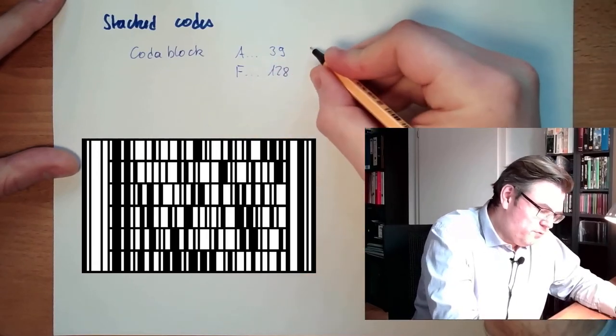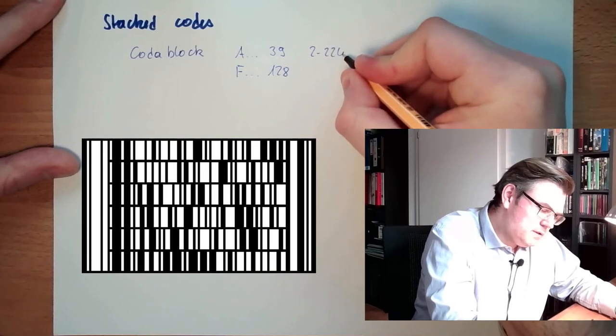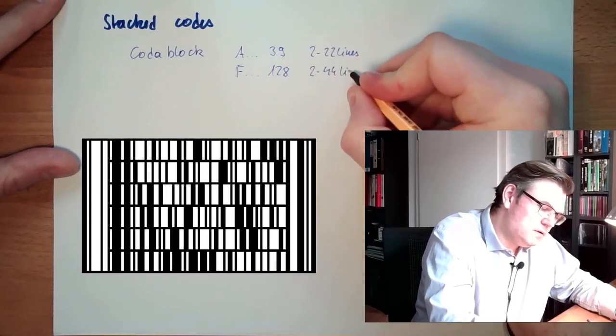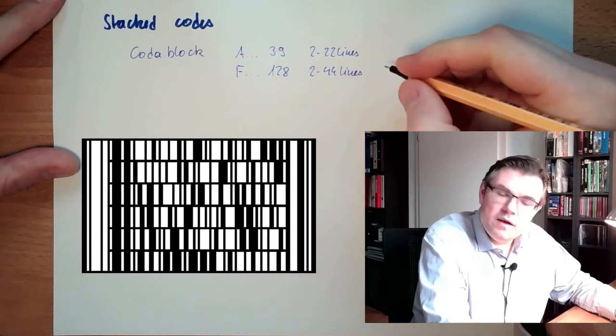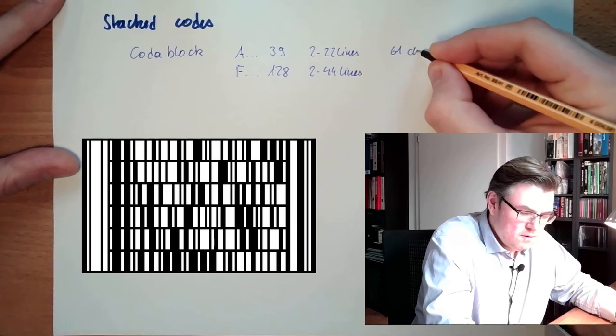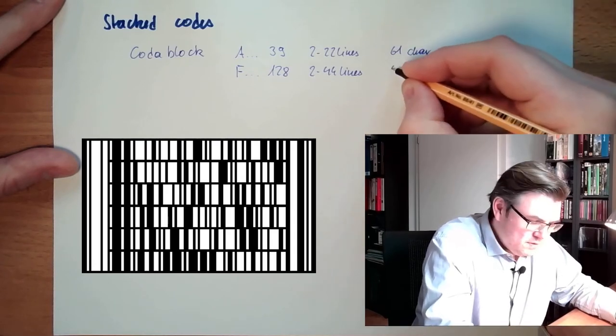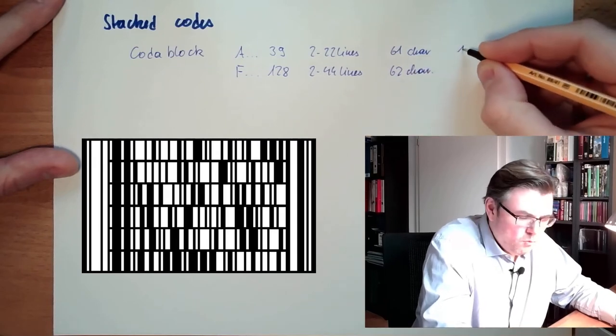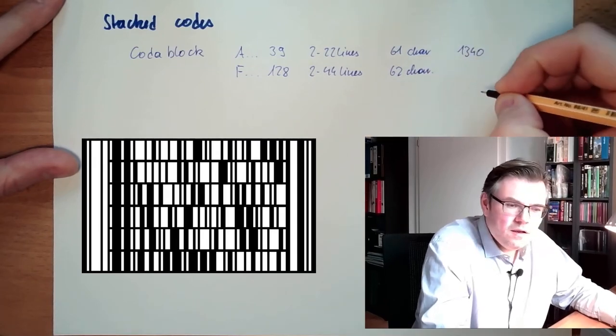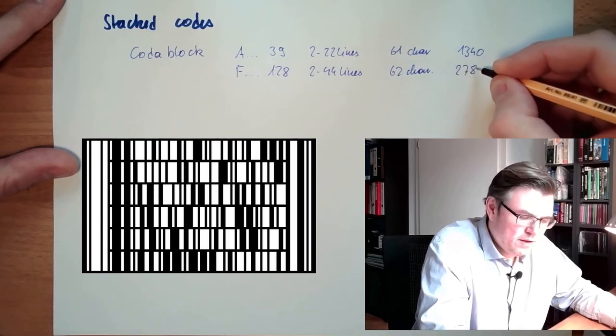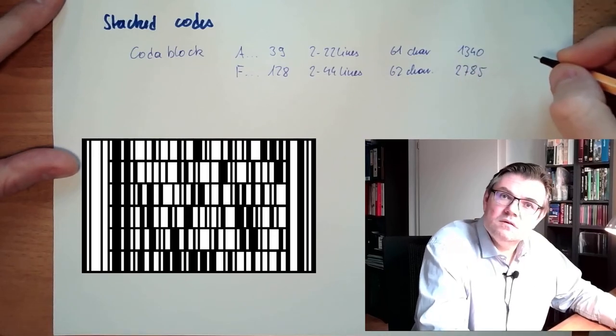Here we can have 2 to 22 lines, here we can have 2 to 44 lines. Here we can have 61 characters per line, here we can have 62 characters per line. So here we would end up at 1,340 characters and here we are ending up at 2,785 characters in total.